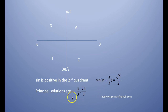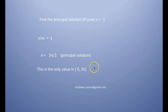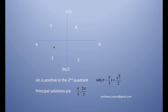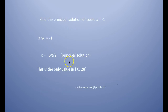So the principal solutions are π/3 and 2π/3. Coming to the next problem: find the principal solution of cosec x = −1. Cosec x = −1 implies sin x = −1, and sin(3π/2) = −1. This is the only value in the closed interval [0, 2π] for which sin x = −1, so the principal solution is 3π/2.